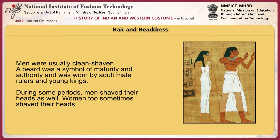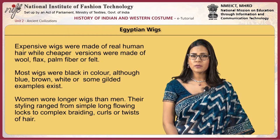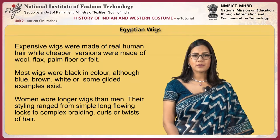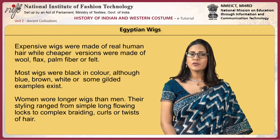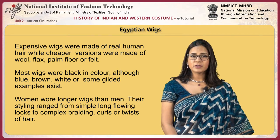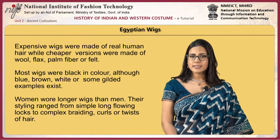Men were usually clean shaven. A beard was a symbol of maturity and authority, worn by adult male rulers and young kings. During some periods, men shaved their heads as well, and women too sometimes shaved their heads. Wigs were worn over shaved heads or hair. Expensive wigs were made of real human hair while cheaper versions were made of wool, flax, palm fiber or felt.